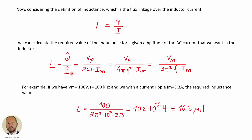Substituting the value before, we get this equation, and from it we can get this other form using the natural frequency. Substituting the value of V_p, we finally get this expression for the inductance, where I_m is the peak value of the current ripple in the inductor.